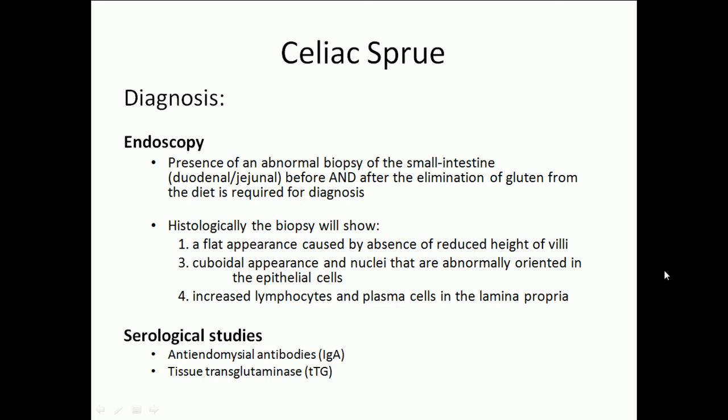To diagnose celiac sprue, an endoscopy or serological studies can be performed. An endoscopy requires an abnormal biopsy of the small intestine before and after elimination of gluten from the diet. Histologically, the biopsy will show a flat appearance caused by absence or reduced height of villi, cuboidal appearance, abnormally oriented nuclei in epithelial cells, and increased lymphocytes and plasma cells in the lamina propria. For serological studies, IgA and TTG antibodies will be present.